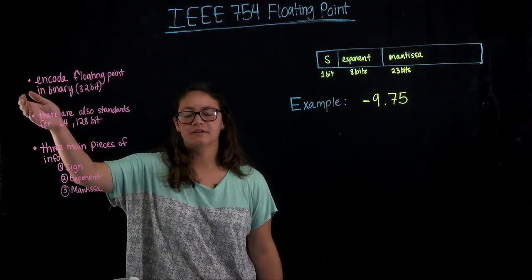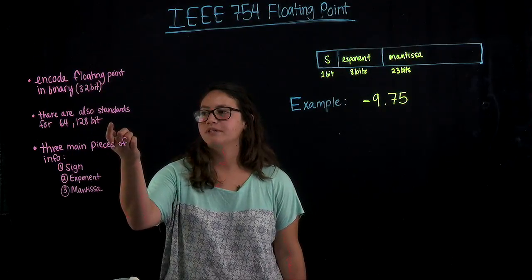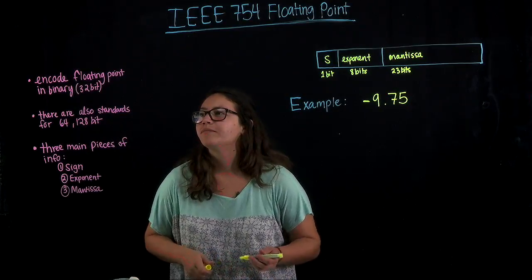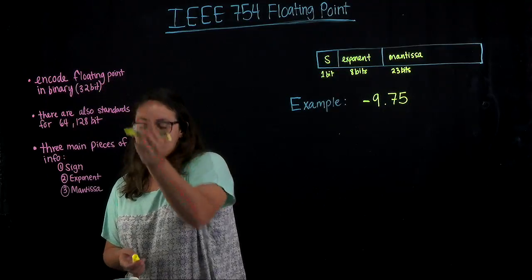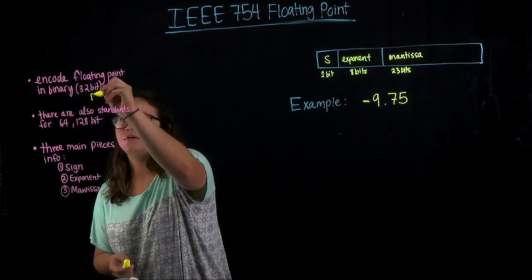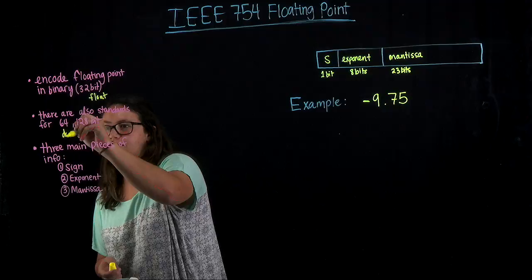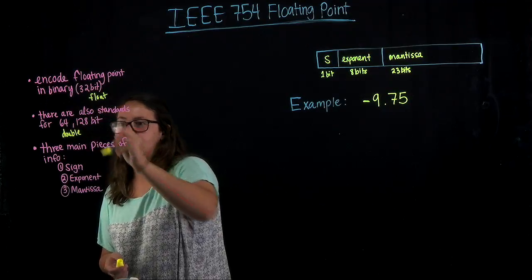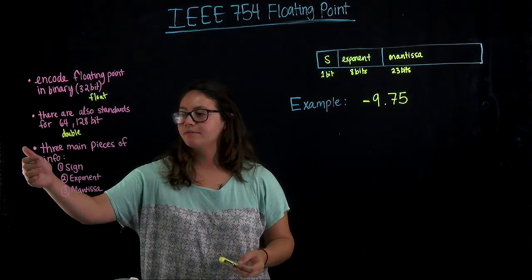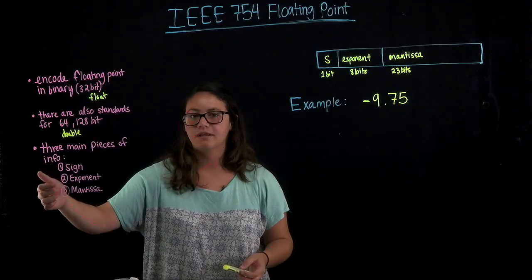In this class, we're just going to learn it for the 32-bit version, but there are also IEEE standards for 64-bit and 128-bit. One interesting thing is that in C++, the 32-bit corresponds to a float data type and 64 corresponds to a double precision data type. When we're doing this, we're going to have three main pieces of information: the sign, exponent, and then the mantissa.